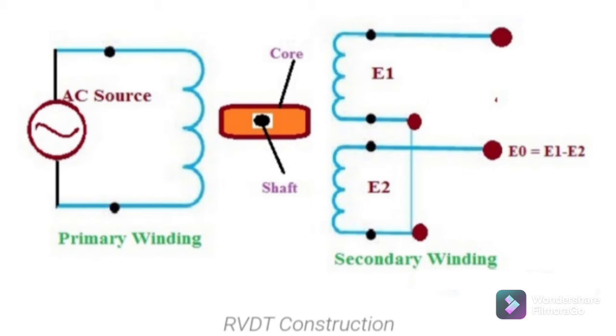The construction of both the RVDT and LVDT are very similar, but the main difference is the shape of the core in the transformer winding. This core will turn between the two windings of the transformer due to the shaft.